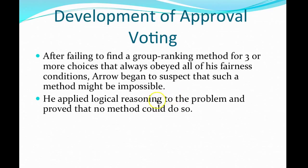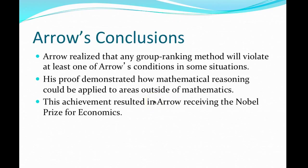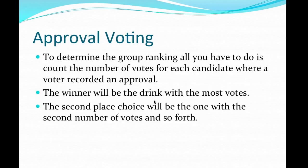He did go out and prove this, and as a result he won the Nobel Prize in Economics for his proof of Arrow's Conditions — all five. No system works. What he did do, though, was figure out a system that was pretty good, and that is approval voting.